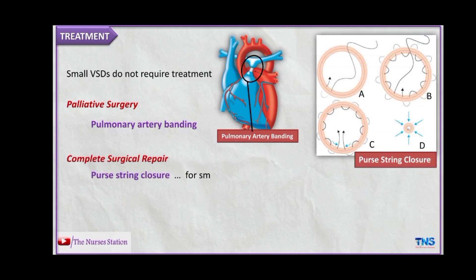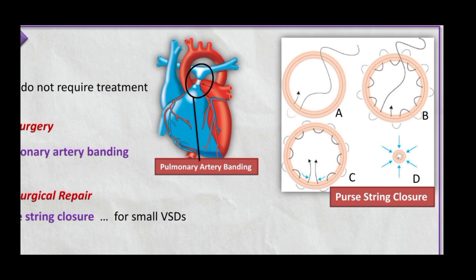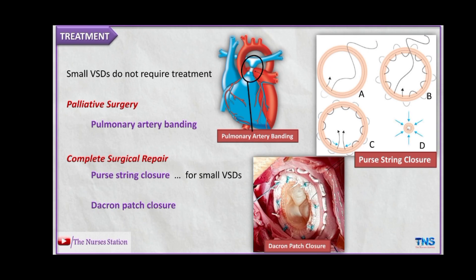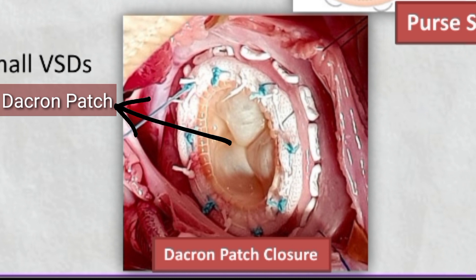Complete surgical repair includes purse-string closure, which involves suturing around the opening in the ventricular septum and pulling the suture to close it. Another option is Dacron patch closure, which involves suturing a prosthetic Dacron patch over the opening in the ventricular septum to close the VSD.